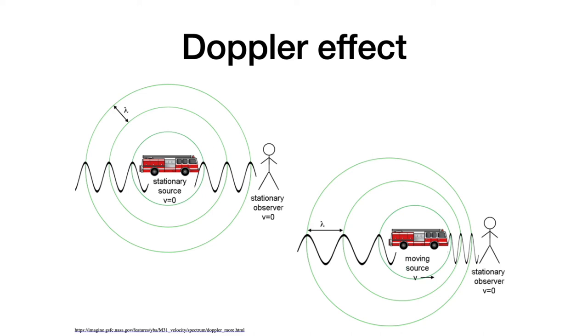The other method for observing extrasolar planets uses the Doppler effect. What is the Doppler effect? It's the effect which is responsible for the pitch of a car horn or a car siren changing as a car drives by you.